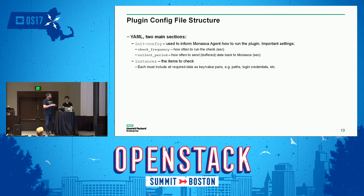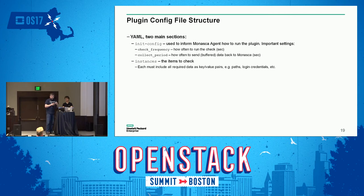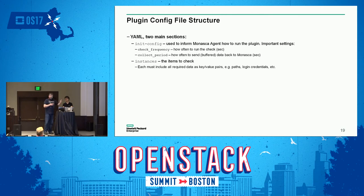The configuration files have two jobs: to configure the collector and to configure the plugins. They're YAML with two things: a dictionary called init_config, which tells the collector how to run the plugin — how frequently and how often to relay the packaged data — and a list of instances. Each instance, in this case a storage cluster, provides a dictionary describing what it is, how to reach it, any login credentials, and any parameters needed to perform the checks.